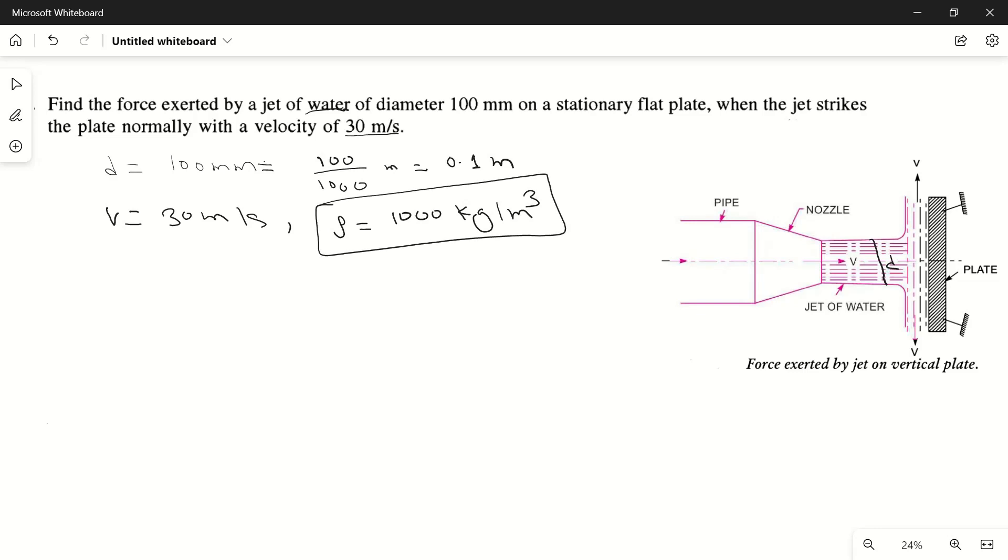Now we have these values. We have to calculate the force exerted by this jet on this vertical fixed plate. So what will be the force? Let's see. Force is equal to rate of change of momentum, which will be equal to initial momentum minus final momentum divided by time. So it will be m1v1 minus m2v2 divided by time. So mass divided by time will be mass flow rate.